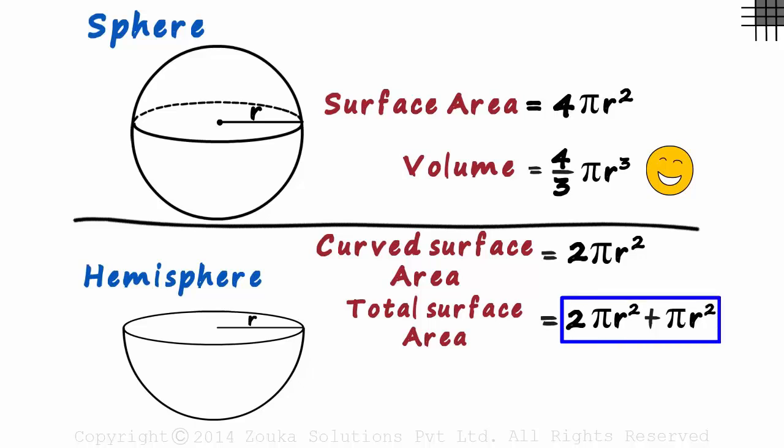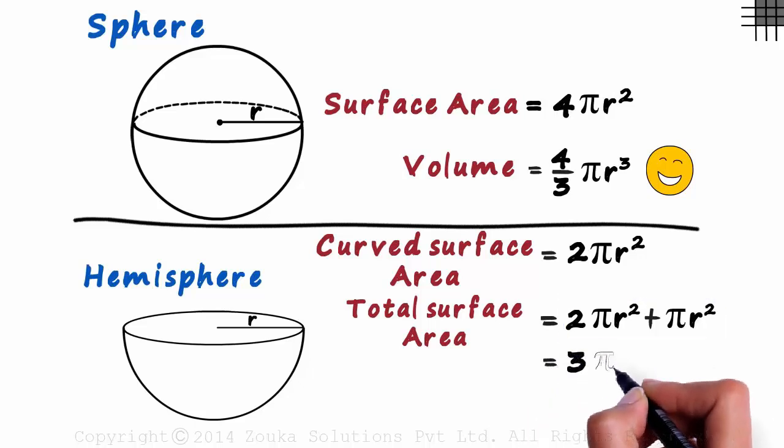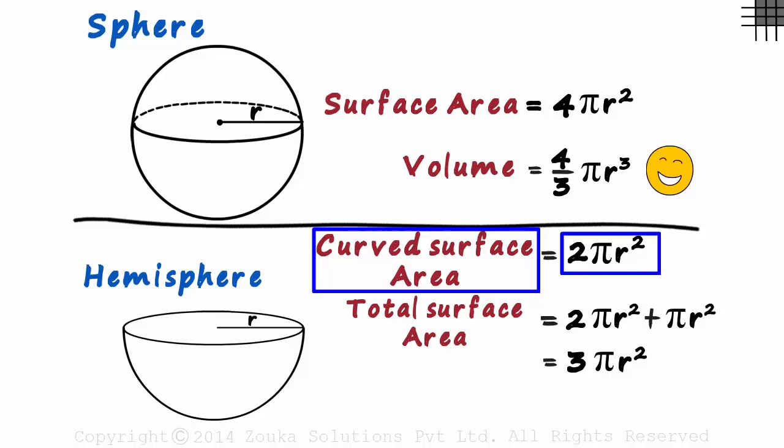Adding these two, we get 3πr². So the curved surface area is 2πr² and the total surface area is 3πr².